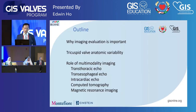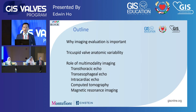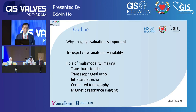Just a quick outline. We'll remind ourselves why imaging evaluation is important. We'll talk about the tricuspid valve and anatomic variability, and then the role of all the different modalities in looking at anatomy. The focus of this talk is really not on quantification — we could spend a whole hour on that. We'll really focus on anatomy and how it relates to intervention.